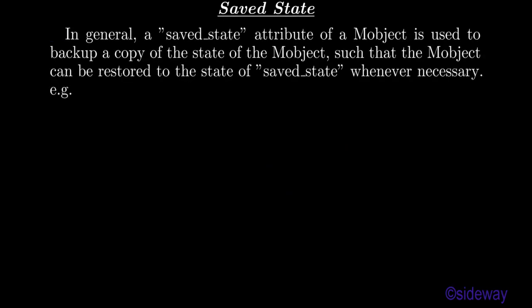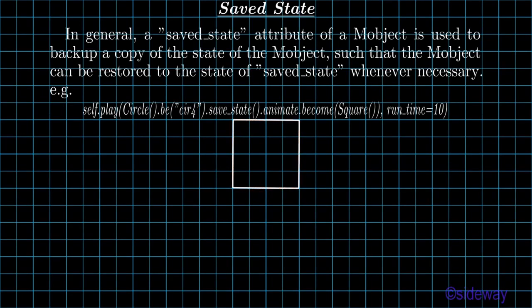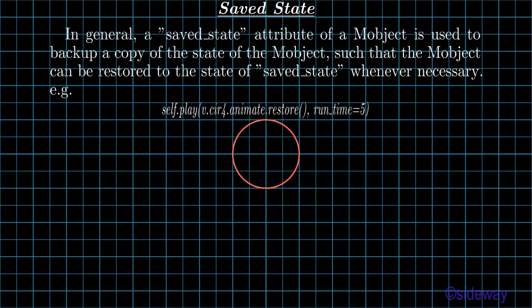Saved State. In general, a saved_state attribute of a mobject is used to back up a copy of the state of the mobject, such that the mobject can be restored to the state of saved_state whenever necessary. For example: self.play, circle, dot b, cir4, dot.save_state().animate.become(square), run_time=10. self.play, b.cir4.animate.restore(), run_time=5.